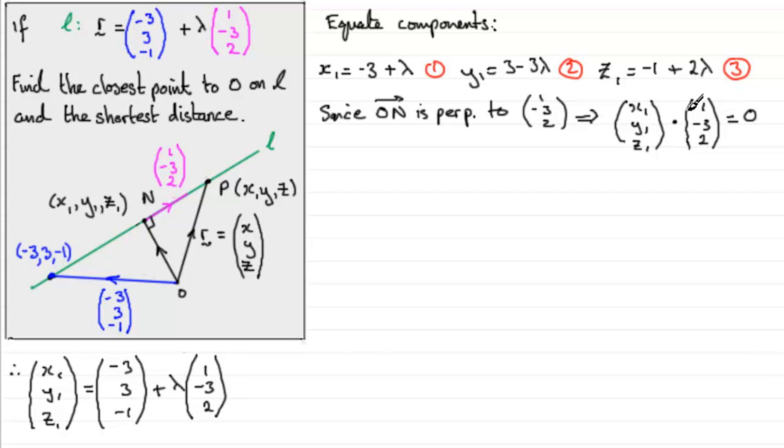Now, we can work this out. We therefore have, when we do the scalar product, x1 times 1, so in other words just simply x1, plus y1 times -3, or in other words -3y1, plus z1 times 2, or 2z1, must equal 0. And that's our fourth equation. So we now have four unknowns and four equations, so we should be able to solve it. So all we need to do now is simply substitute 1, 2, and 3 into equation 4.